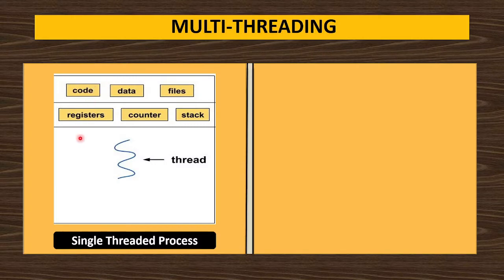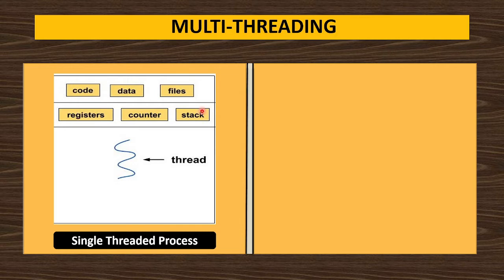First we will see single-threaded process and how it looks inside the main memory. In a single-threaded process, only one thread will be there — shown here in blue color. That thread will have code, data, files, register, counter, and stack. So this thread has its own stack, own counter, own register, and code, data, and file section.